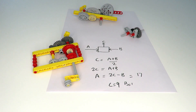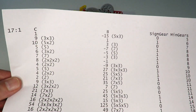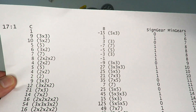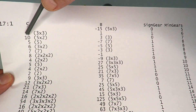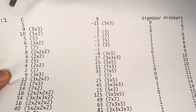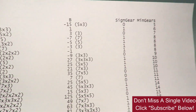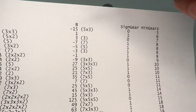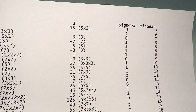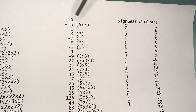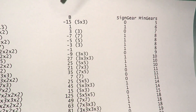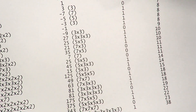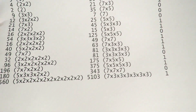On the printout, at the top left we've got the 17-to-1 ratio and the values for C and B that allow us to make it. For example, we've got C equals 9 and B equals 1, so 2 times 9 take away 1 equals 17. There's also a column showing the minimum number of gears needed for each solution, and the gearing ratios required for each individual value of B and C — for example, to create 15 you need 5 times 3, to create 27 you need 3 times 3 times 3.